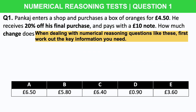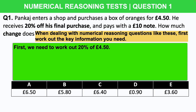When dealing with numerical reasoning questions like these, you need to first work out the key information you need. I've put that key information in bold to help you: the £4.50, 20% off the final purchase, pays with a £10 note, how much change does he get? So first we need to work out 20% of £4.50. To do this we divide £4.50 by 100, then multiply that number by 20 to work out what 20% of £4.50 is, which gives us 90p.